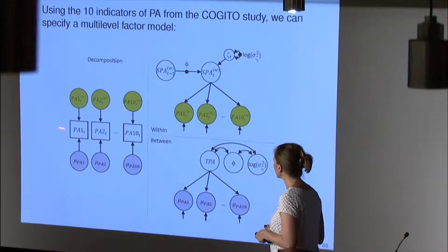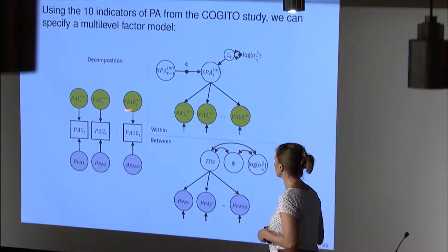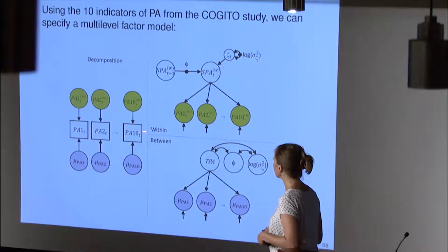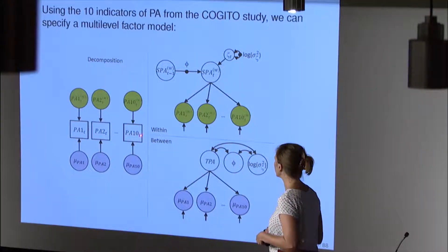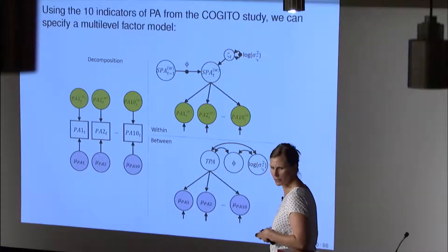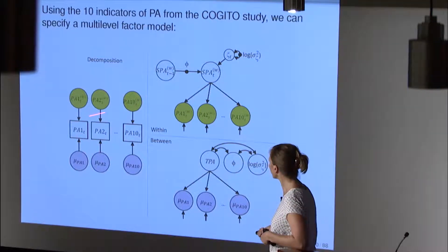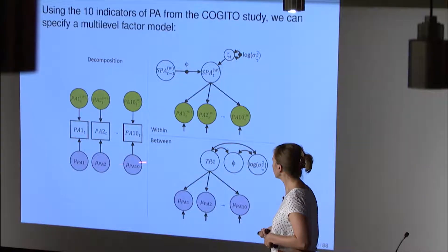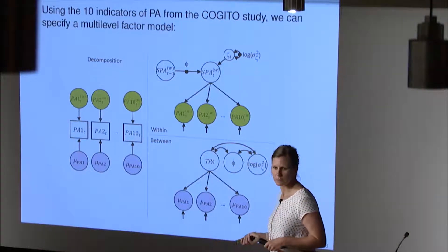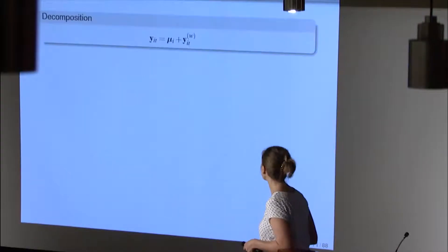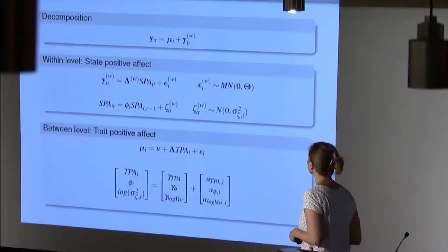So they are observed, and then they are split into a within- and a between-person part. When you talk about PA1 to PA10 at the within-person level, you're talking about the within-person part. When you talk about them at the between-person level, you talk about the mean part. So you're using that as a continuous variable.